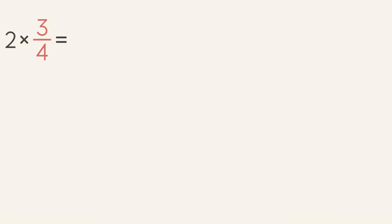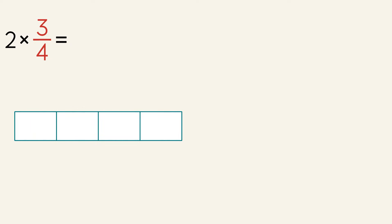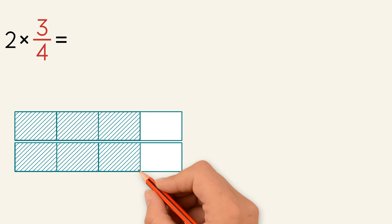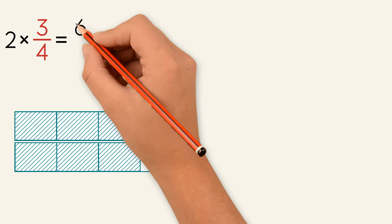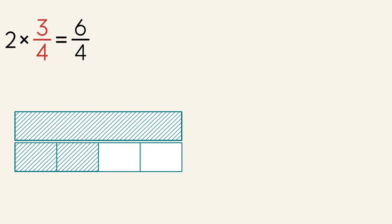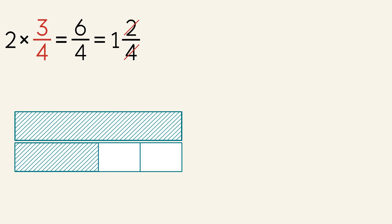Let's do another example: two times three over four. When we multiply two times three-fourths, it means we are finding two groups of three-fourths — one group of three-fourths and another group of three-fourths. We have six-fourths shaded in, so six is the numerator. The denominator stays the same, so we have six-fourths. This is an improper fraction, so we need to convert to a mixed number. We regroup to make a whole, giving us one whole and two-fourths, or one and two-fourths. We can simplify two-fourths to one-half, so the final answer is one and one-half.